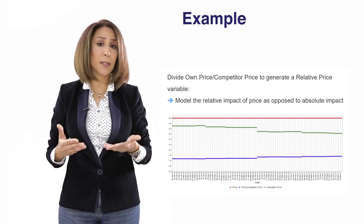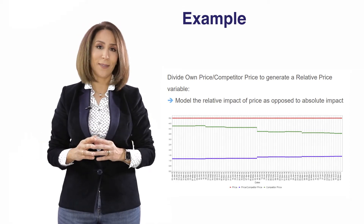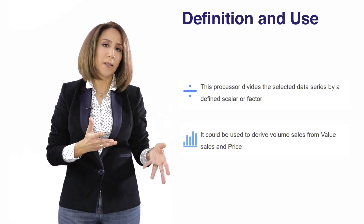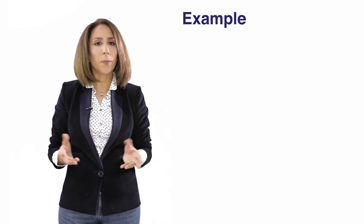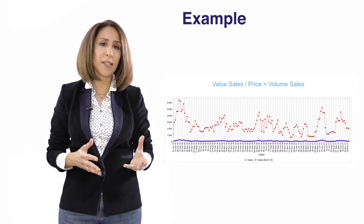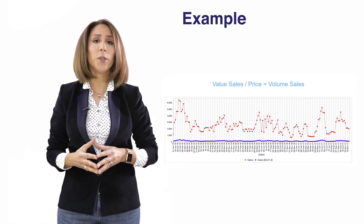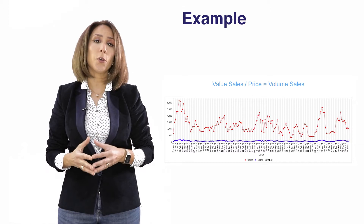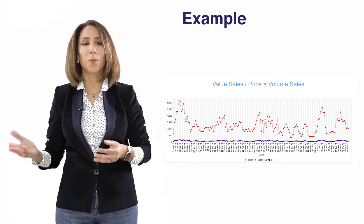This relative price variable helps us see the impact of relative price position on sales. The Divide by a Scalar processor divides the selected data series by a specific parameter defined by the user. For example, if we have value sales and know the average price, we use this processor to divide value sales by price in order to obtain the volume.